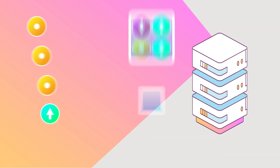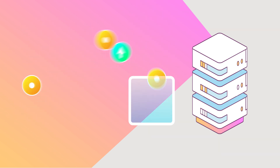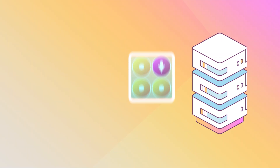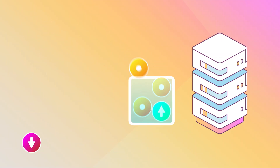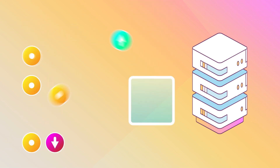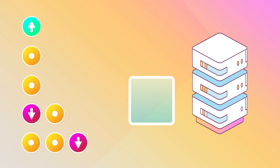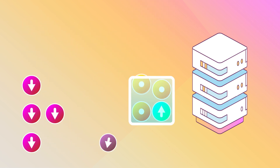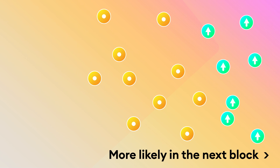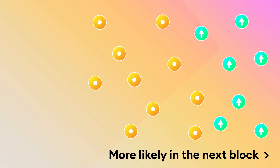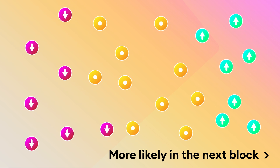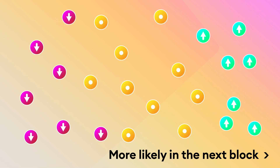If there isn't much network activity, great — everyone gets in the block, regardless of priority. But if there is a lot of activity, it's like the Hunger Games for transactions. Those with the highest priority get included in the next block. The rest keep competing, or eventually die. High priority transactions go to the front of the line, so are generally faster and more reliable. Low priority transactions are near the back, running the risk of never going through at all if the network is busy and blocks are full.